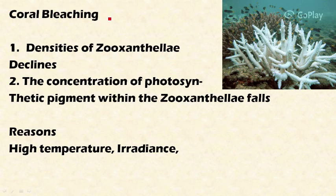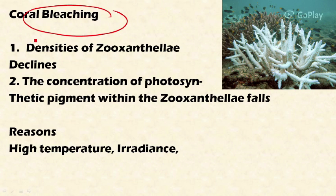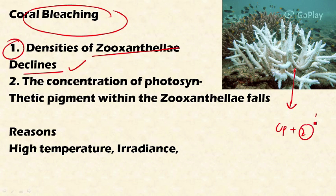Now let's discuss coral bleaching in detail. Coral reefs contain both coral polyps and zooxanthellae — zooxanthellae are the microscopic algae that perform photosynthesis and also impart coloration, providing different pigments to the coral reefs. This image shows healthy coral reefs, and this shows bleached coral reefs — the zooxanthellae provide the color.